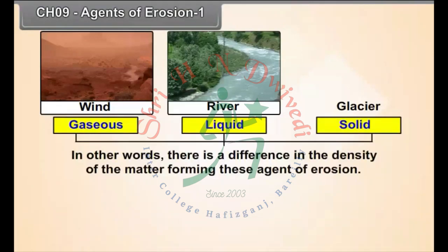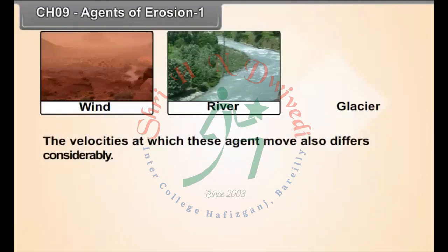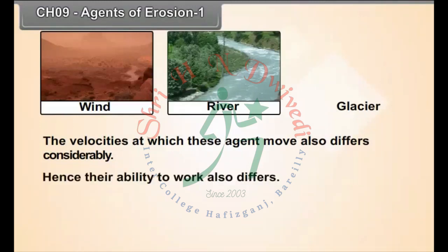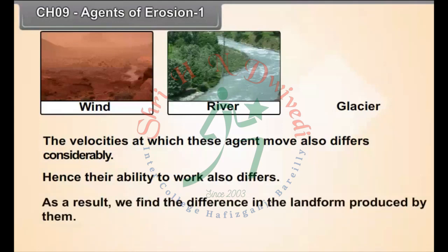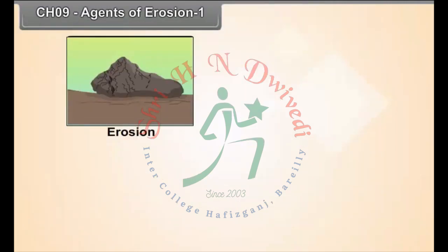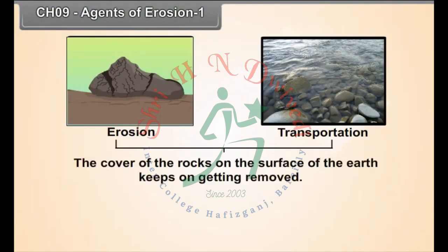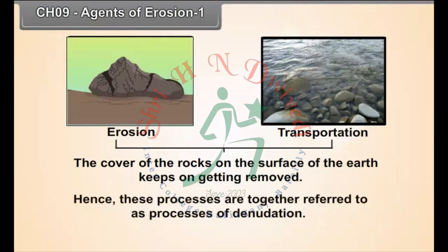There is a difference in the density of the matter forming these agents of erosion. The velocities at which these agents move also differ considerably. Hence, their ability to work also differs. As a result, we find differences in the landforms produced by them. Through erosion and transportation, the cover of the rocks on the surface of the earth keeps on getting removed. Hence, these processes are together referred to as processes of denudation.